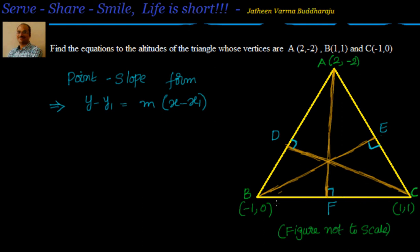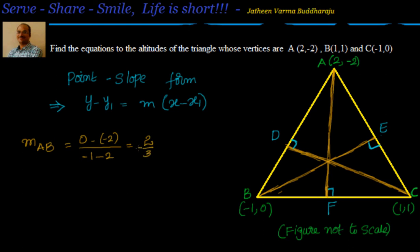Step 1: find the slopes of the sides of the triangle — AB, BC, and CA — so we can find the slopes of the altitudes. The slope of AB equals 0 minus (-2) divided by -1 minus 2, which gives -2/3. So the slope of AB is -2/3.